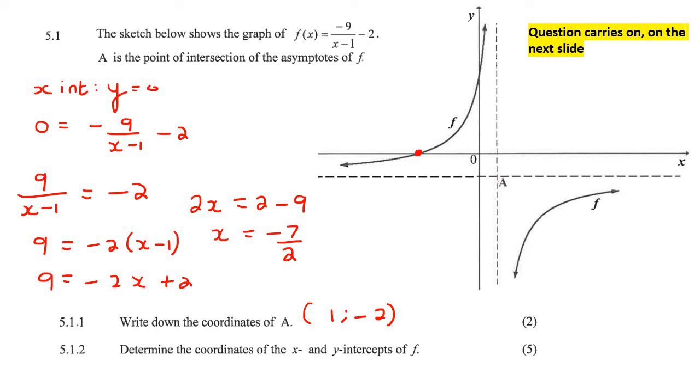which is the same as negative three comma five if you want. So for the answer here, you would say, don't just say negative seven over two, say negative seven over two, and then also give the y value.